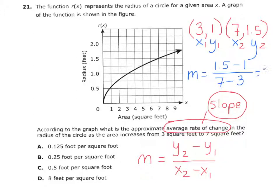And so I have 0.5 over 4. And what is 0.5 over 4? 0.125. And so the answer is the average rate of change from 3 to 7 in that range is A, 0.125 foot per square foot.